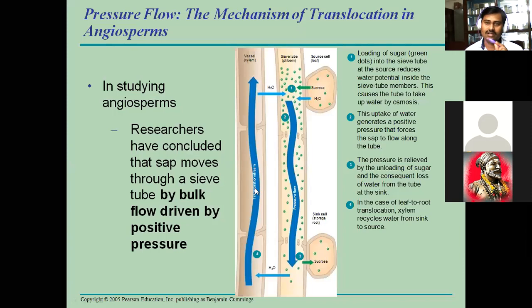Here, the vessel of xylem and the sieve tubes of phloem are running together. The source cell is the leaf where food is produced in higher amounts as glucose and sucrose.